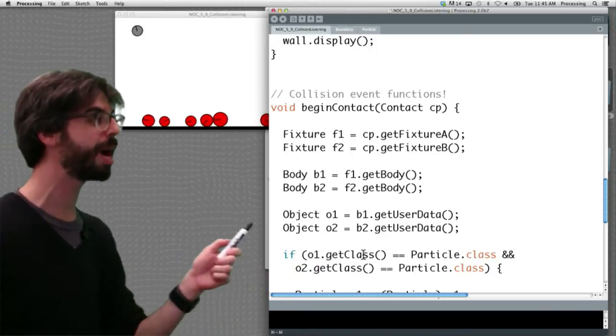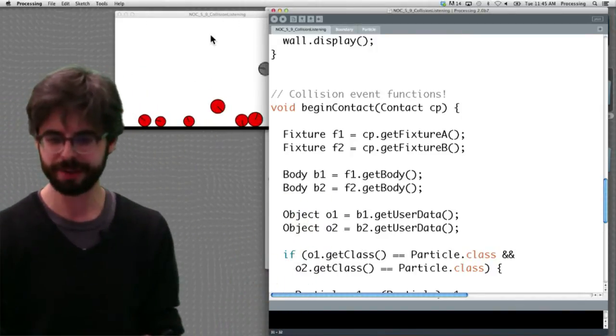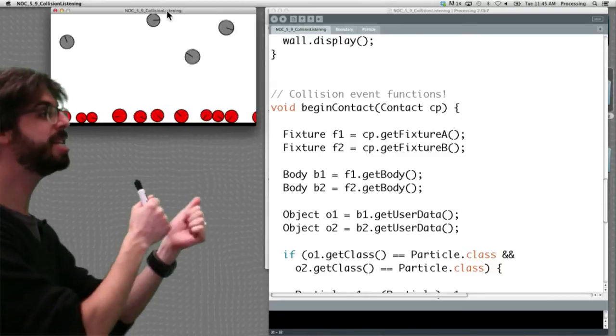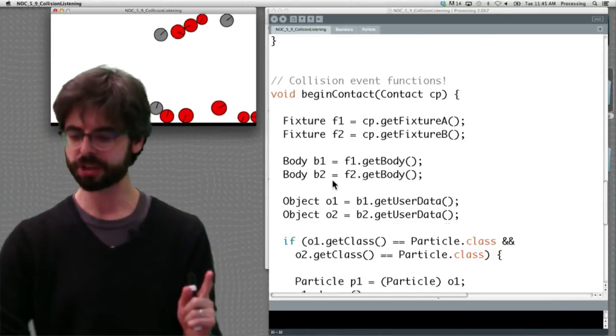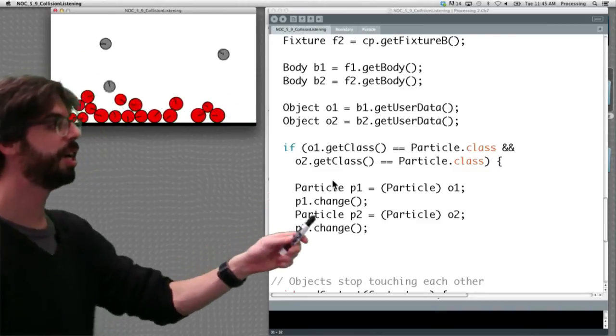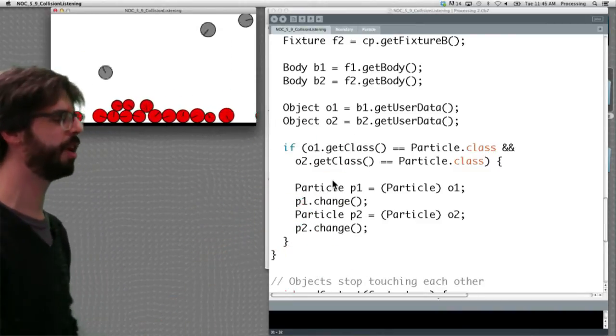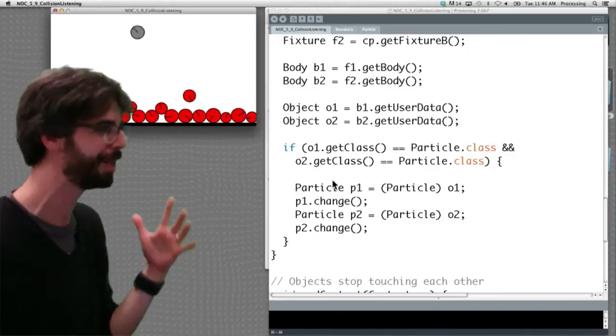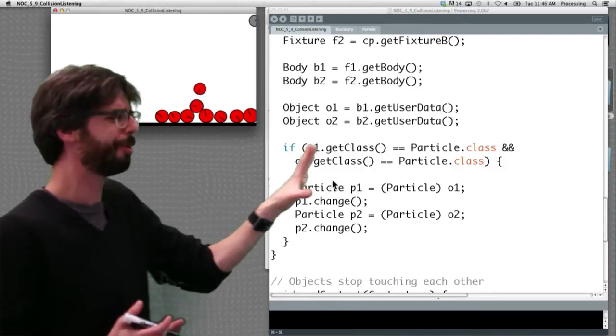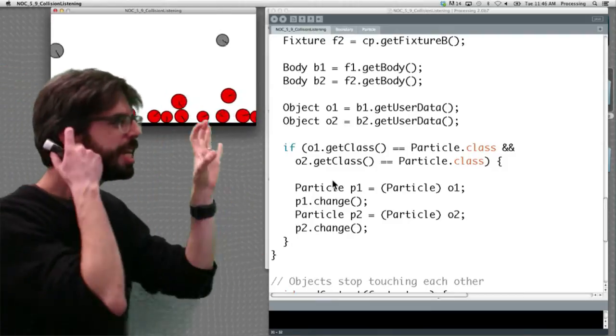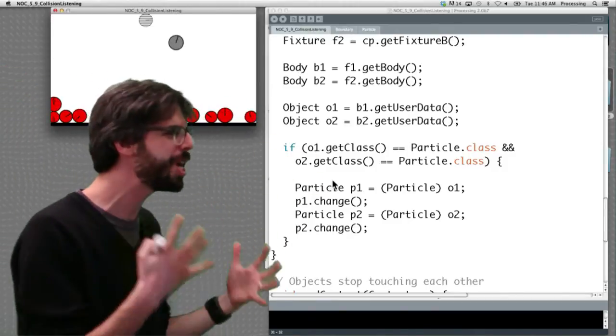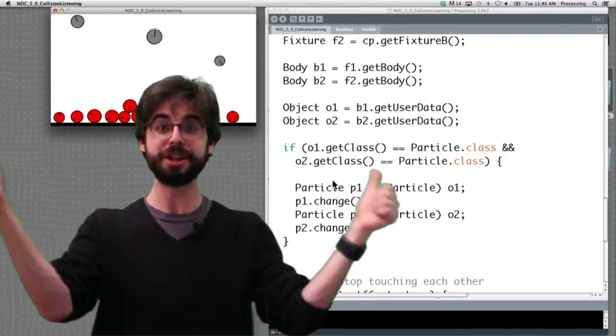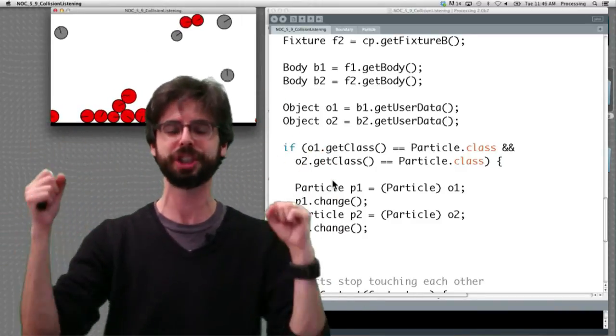Because what we're doing here in this particular scenario, if we look at this, is we're only turning them red when a particle has hit another particle, not when it hits a boundary. Remember, there's boundaries in here also. So we're saying, if those objects are particles, cast them as particles and call that change function. So if object-oriented programming and Java-y stuff is all new to you, this is going to look like gobbledygook. I mean, it looks like gobbledygook to me. It's kind of horrible, actually. And I wish we lived in a world where this isn't the code that we had to write. But you read this over, even though the syntax is weird, what we're saying is, if the object is a particle, if object one is a particle and object two is a particle, then two particles collided, make those objects into particles, and call the change function to turn them red.